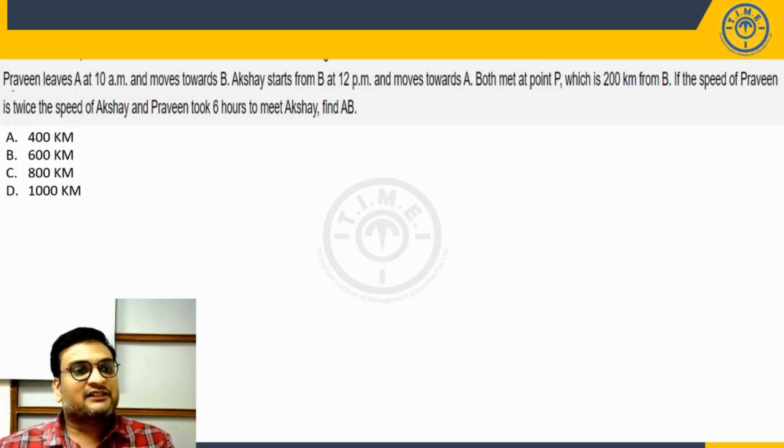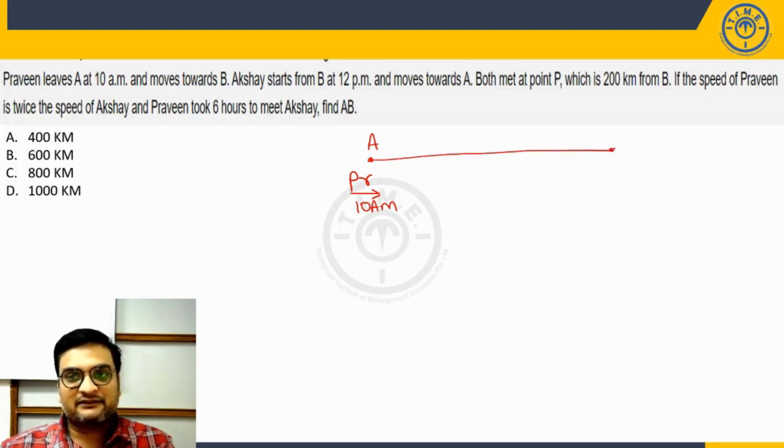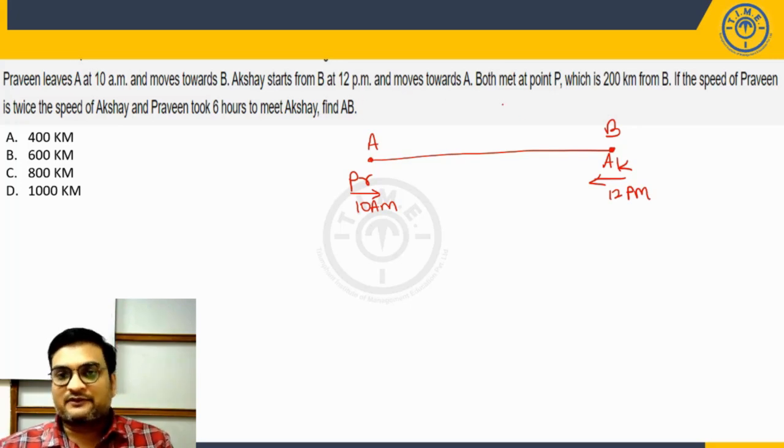So let us start the discussion here. It says Praveen leaves point A at 10 AM. So there is a point A and Praveen is leaving from here at 10 AM. Akshay starts from point B. So there is a point B here and Praveen is going towards point B. Akshay starts from point B and moves towards A and he is starting at 12 PM. So basically 2 hours later and moves towards A.